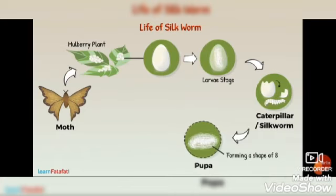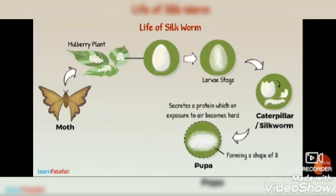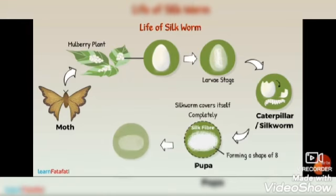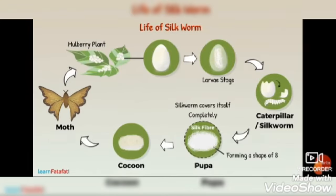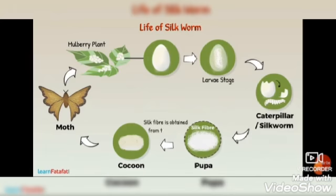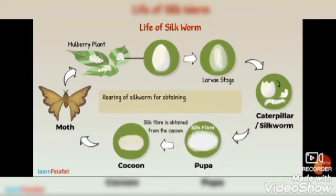While doing so, the silkworm secretes a protein which on exposure to air becomes hard. This is the silk fiber. The silkworm covers itself completely and enters the next stage of its life cycle called pupa. The covering so formed is called the cocoon. Inside the cocoon, the pupa grows and becomes a moth. The silk fiber is obtained from the cocoon of the silkworm. The rearing of the silkworm for obtaining cocoons made of silk fibers is called sericulture.